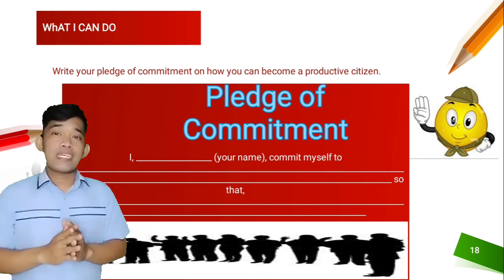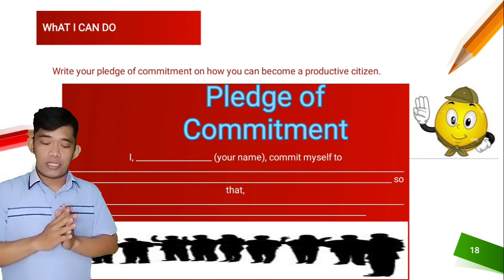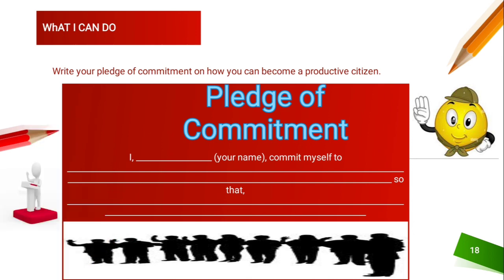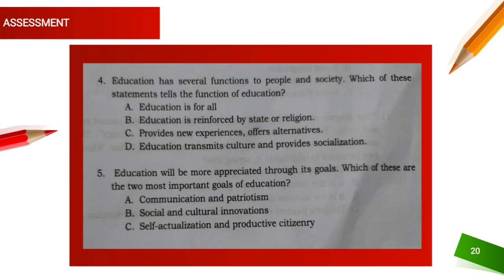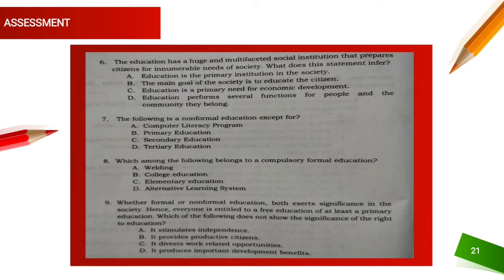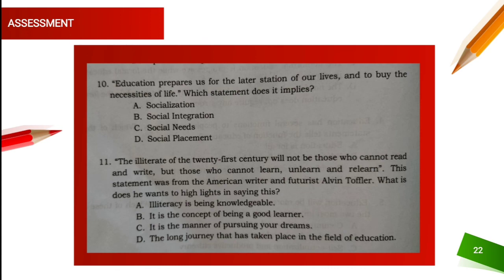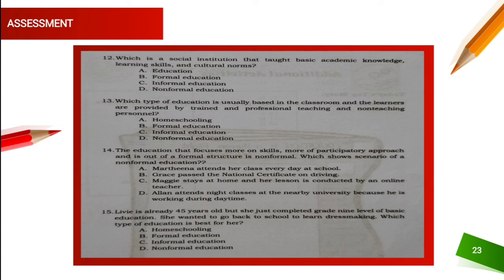We are almost done! We are already on the Assessment part. As a recall, the assessment part is the task that aims to evaluate your level of mastery on the lesson — to evaluate whether you really understood the lesson or not. We have a 10-item assessment; answer it with honesty. Don't look at the key to correction at the end of your module. Instead, try to answer it by yourself, so that you will know whether you have mastered the subject or whether you need to read the module again.